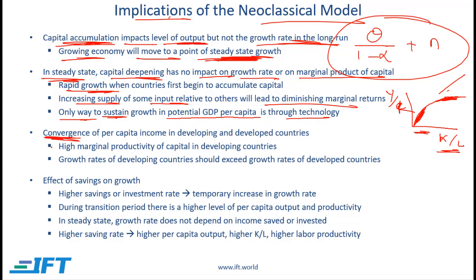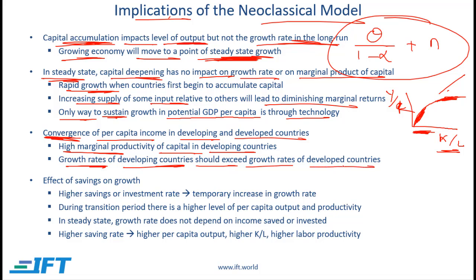The third point has to do with convergence. According to the neoclassical model, there will be a convergence of per capita income in developing and developed countries — developing countries will eventually catch up with developed countries. The reason is that developing countries have a high marginal productivity of capital because the capital-to-labor ratio is low. So in the short run, growth rates of developing countries should exceed those of developed countries, causing convergence. Later in this lecture we will talk about convergence in more detail.